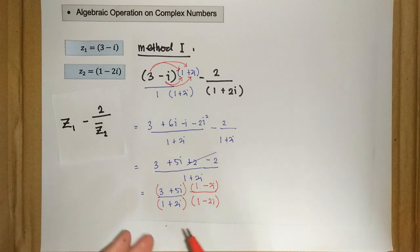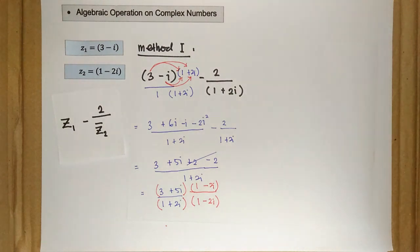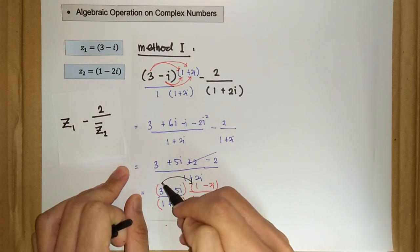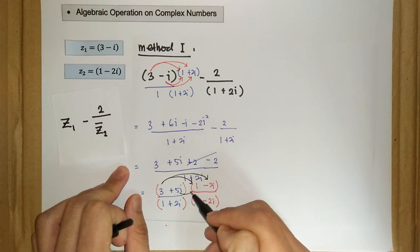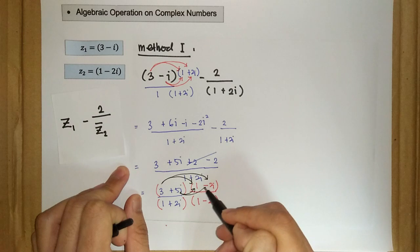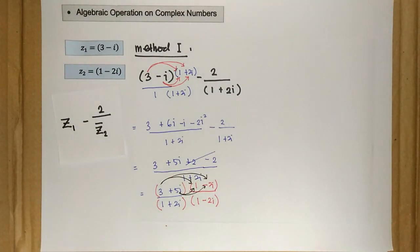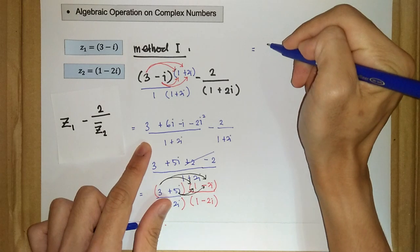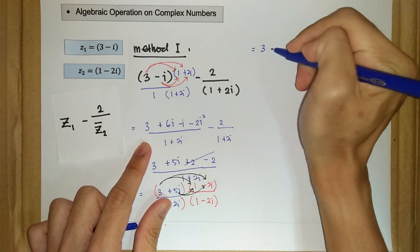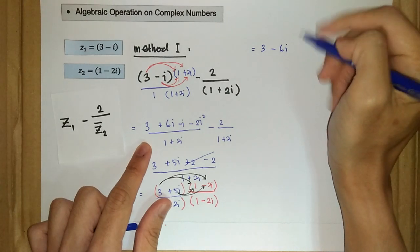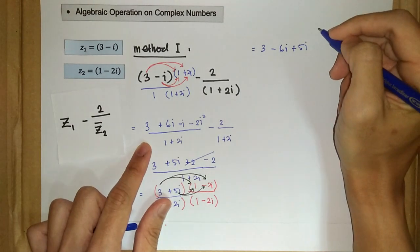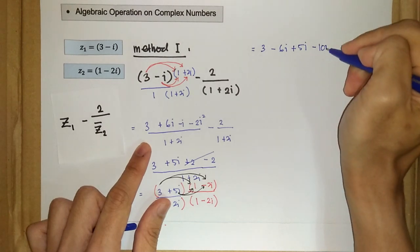We apply the distributive law of multiplication again. For the numerator: 3 times 1 is 3, 3 times negative 2i is negative 6i, 5i times 1 is plus 5i, and 5i times negative 2i is negative 10i squared.